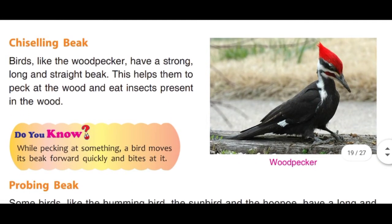Now, the chiseling beak. Birds like woodpecker have a strong, long, and straight beak. This helps them to peck at the wood and eat insects present in the wood. Peck ka matlab hota hai ki koi bird achanak apne sar ko peeche le jakar jhatke se quickly forward bite karta hai — ise pecking kehte hain. Woodpecker jaisi birds ke strong, long, and straight beak hote hain jo unhe wood mein peck karke insects khane mein help karte hain.